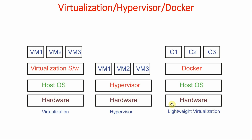Now, where does Docker fit? Again we have the same hardware — i7, 16 GB RAM — on that a host operating system, which is preferably going to be Linux. On that we are going to install Docker. What your virtualization layer or hypervisor layer was doing, the same thing is done by Docker. By using Docker we are going to create containers: C1, C2, C3. When you use virtualization or hypervisor it creates VMs; in the case of Docker it creates containers.